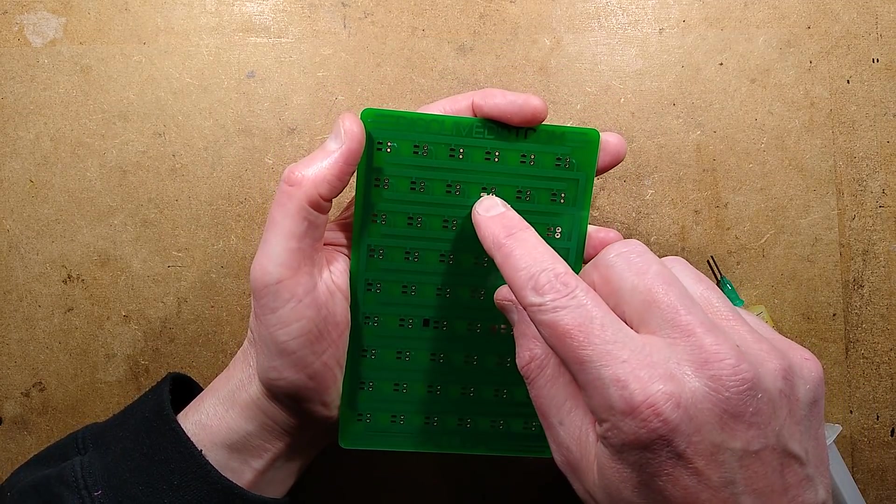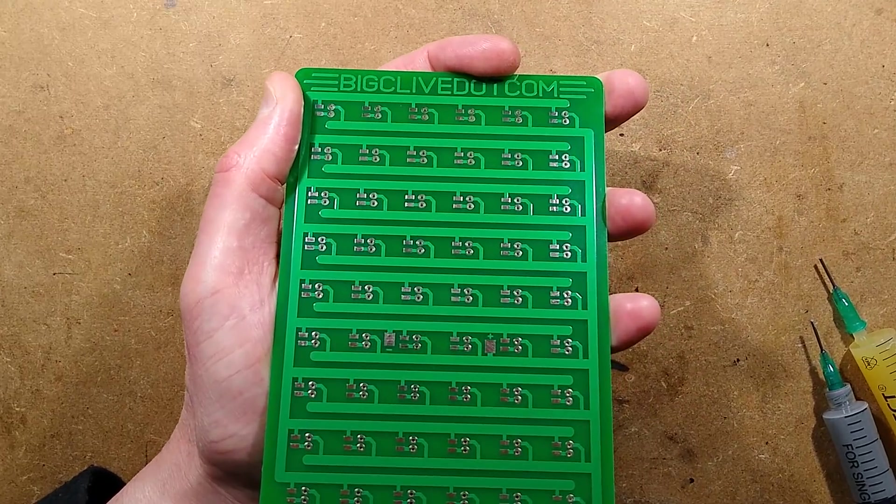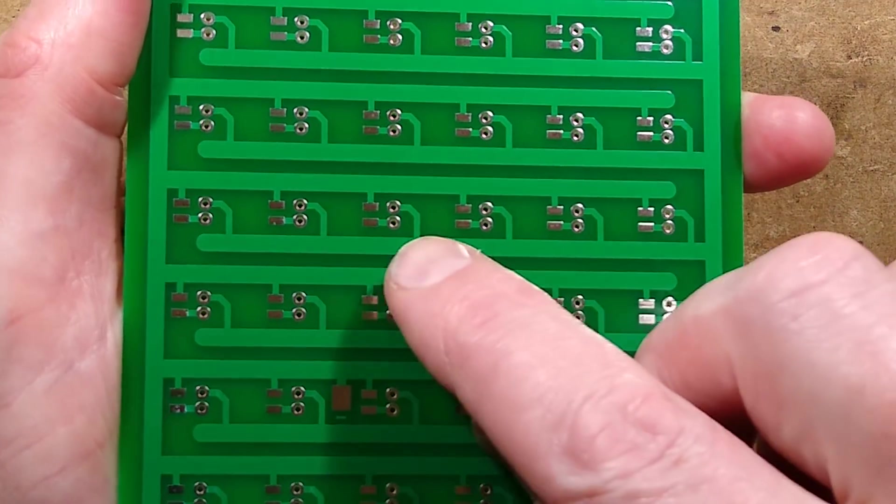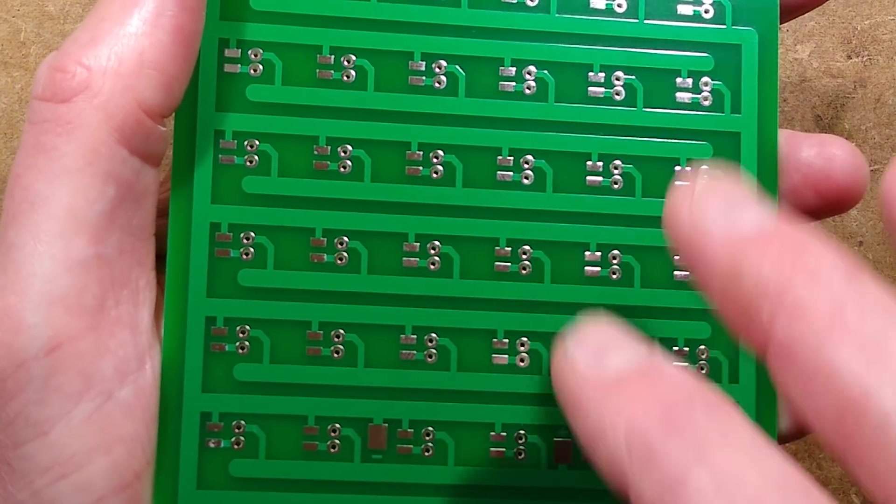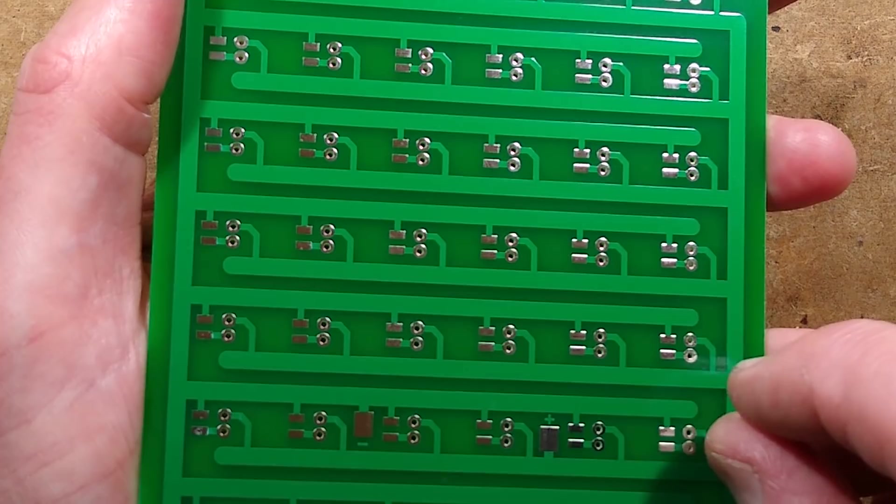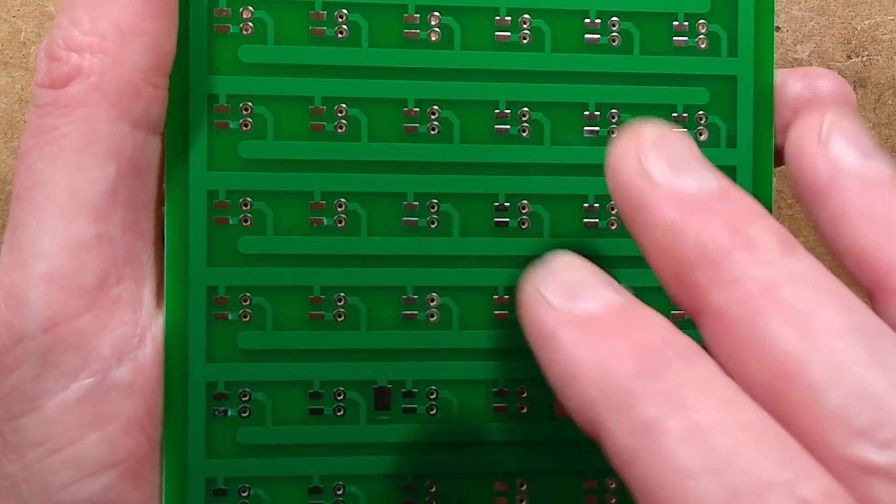This time I've got the advantage that I've got the solder resist around the surface mount pads, so the resistors aren't going to go wonky all over the place like they did last time. This should just make it a lot easier.